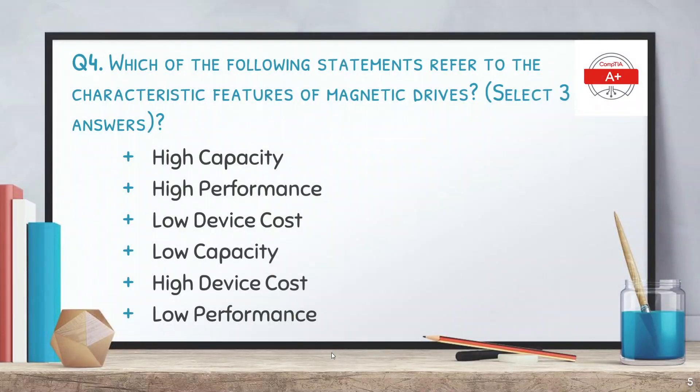Question number four: which of the following statements refer to the characteristic features of magnetic drives? Select three answers. The options are high capacity, high performance, low device cost, low capacity, high device cost, and low performance. The answers are high capacity, low device cost, and low performance.